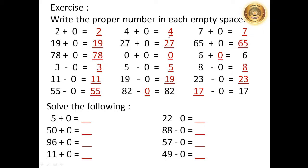4 plus 0 is equal to 4. 27 plus 0 is equal to 27. 0 plus 0 is equal to 0. 5 minus 0 is equal to 5. 19 minus 0 is equal to 19. 82 minus 0 is equal to 82.